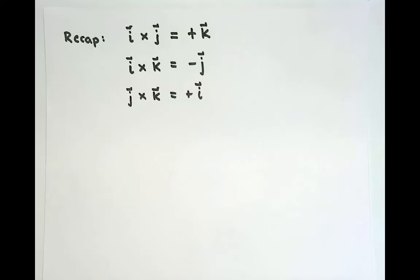Welcome back. In the last video, we studied a simplified version of the first problem in finding cross products, which is how do we produce a third vector that is orthogonal to the two inputs of the cross product? In doing so, we produced these three relations.